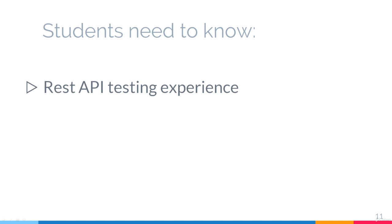Let's talk about what students should know already to successfully finish this course. In this course we will be learning REST Assured, a Java library for automating API tests. Automating API testing without prior knowledge of what those APIs are and how to test them manually isn't a good idea, so having some API testing experience is probably required for this course.